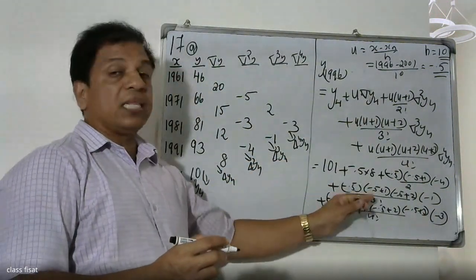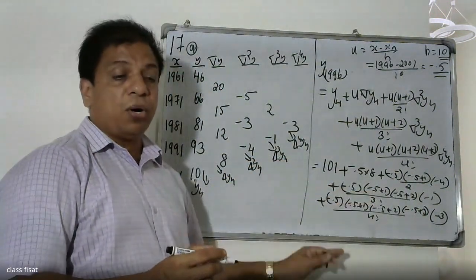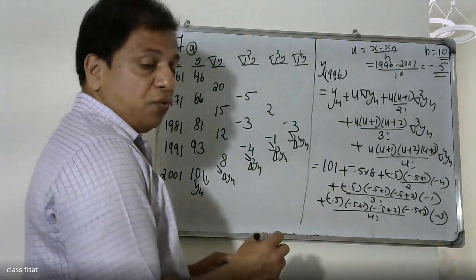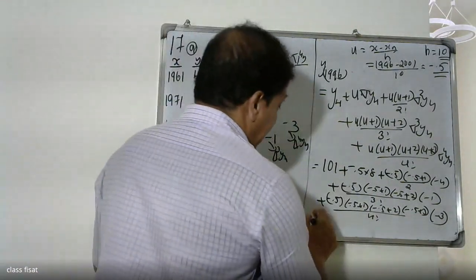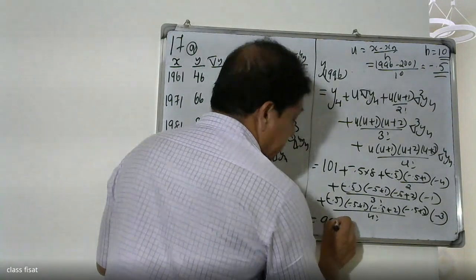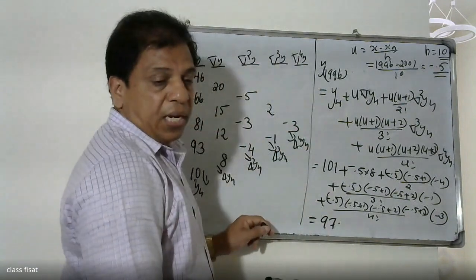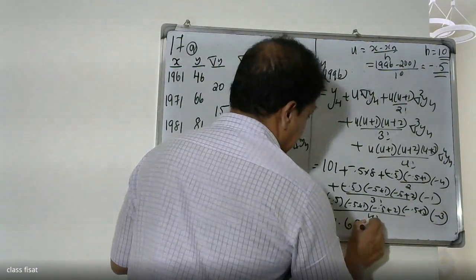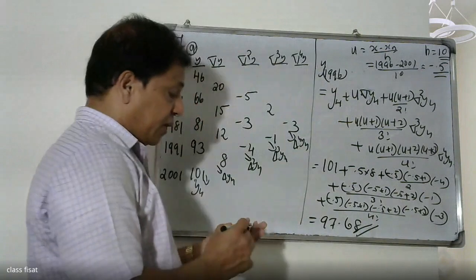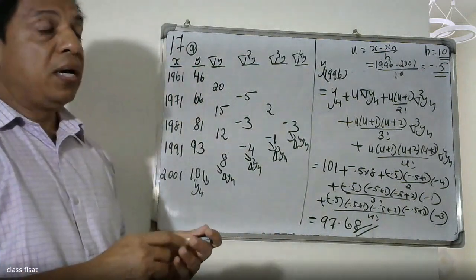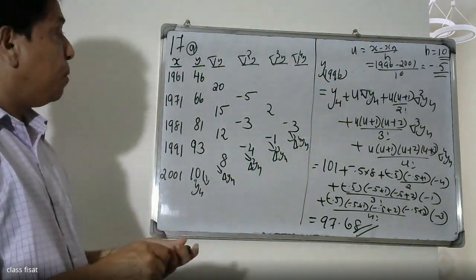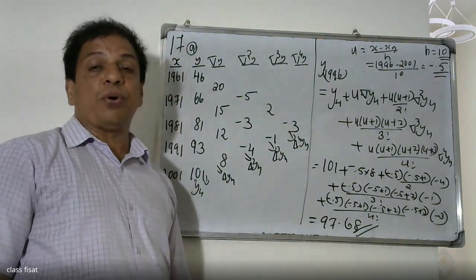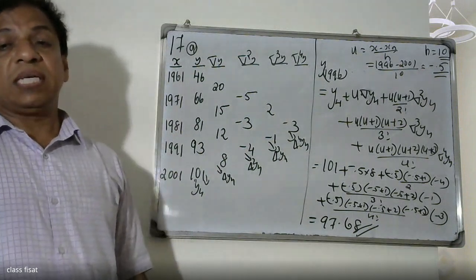After calculating all the values, the result is 97.68. So the 1996 population value is 97.68.